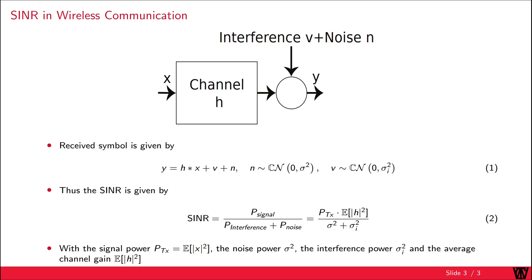We call the expected value of the squared absolute channel the average channel gain, since it is the average scaling of the signal power incurred by the channel. This brings me to the end of this video on the performance indicator signal to interference plus noise ratio. Thank you for watching.